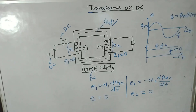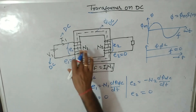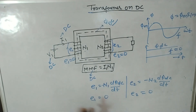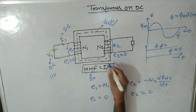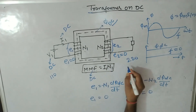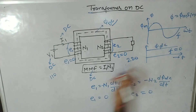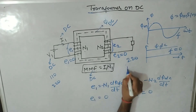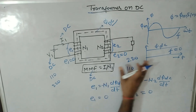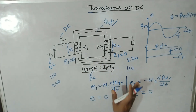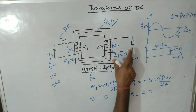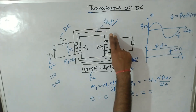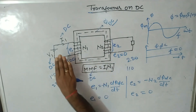As you know, a transformer is used either to step up or step down the voltage. Suppose the source side is 110 volts; stepping up makes it 220 volts, and stepping down from 220 volts makes it 110 volts. However, here we can see that the induced EMF at the primary terminal is equal to zero, and the induced EMF at the secondary terminal is also zero — meaning there is no step-up and no step-down function taking place.